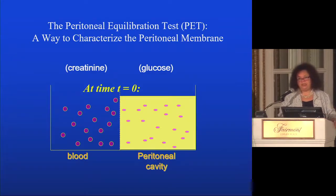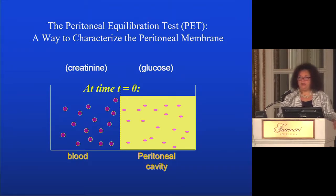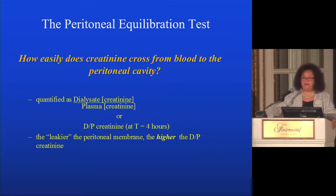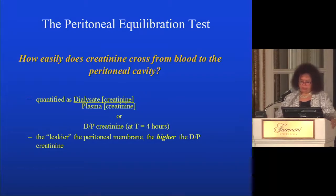At time zero you put in PD fluid. You have all the creatinine in the blood and none in the dialysis fluid, and all the sugar in the dialysis fluid. Things diffuse along their concentration gradient — creatinine from blood into PD fluid, and glucose in the opposite direction. How quickly this happens is what the D/P creatinine ratio is all about. The leakier the peritoneal membrane — meaning more capillary networks open and able to participate in solute and fluid exchange — the higher the D/P creatinine, making a rapid transporter a rapid transporter.